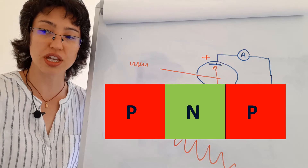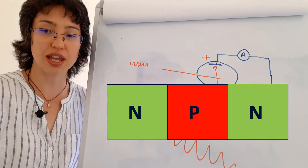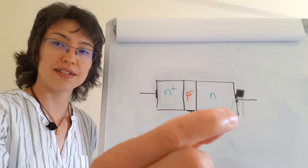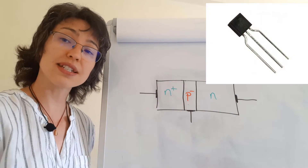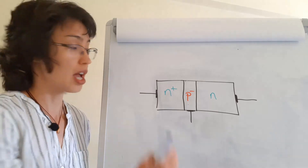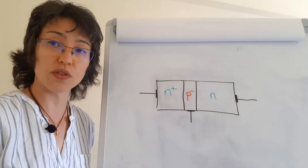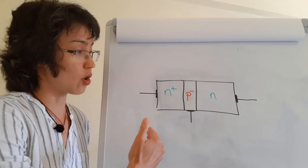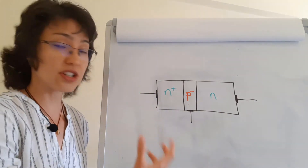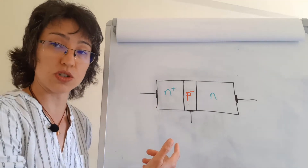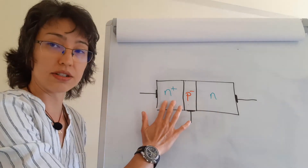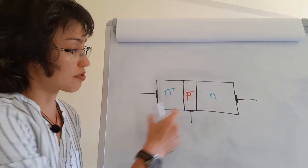These can either be PNP or NPN. This is a transistor, and to explain exactly how they work, I'm going to take an NPN transistor as an example and sketch what that consists of. So we have three different layers of semiconducting material — they're extrinsic semiconductors because they've been doped. Here you see you've got an N-doped region, a P-doped region, and another N-doped region.